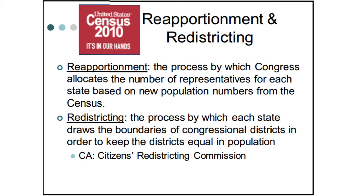In densely populated areas like Los Angeles, we have many small districts. Up in Northern California — Modoc and Del Norte counties, for example — we have very large districts because the population is much smaller. In California, we have the Citizens Redistricting Commission, which draws the lines and takes testimony from all over the state. They use criteria provided under state law and the California Constitution to ensure fair districts for voting our representatives into Congress.